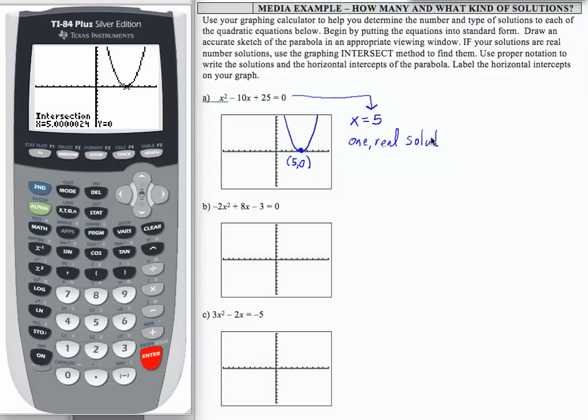So what you need to get used to is graphing your quadratic and seeing how many times it crosses the horizontal axis. That will tell you how many solutions you're going to have that are real numbers. We'll talk about some different kinds of solutions in one of these problems here, either b or c. Let's go on to part b.